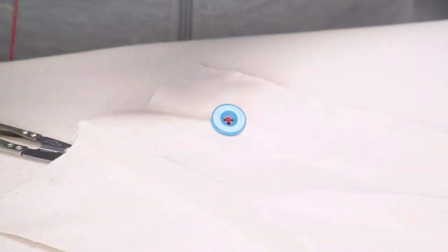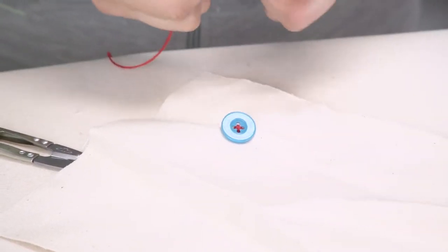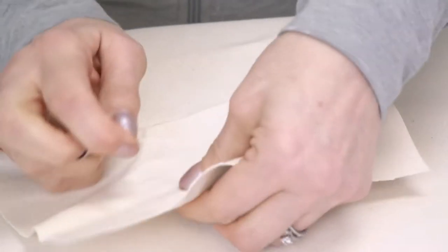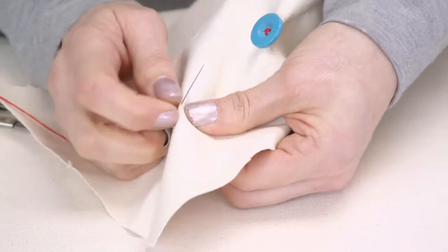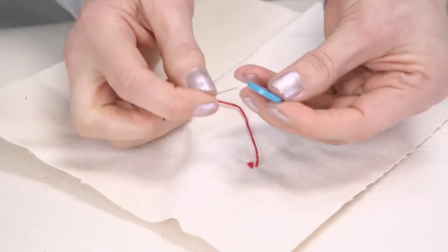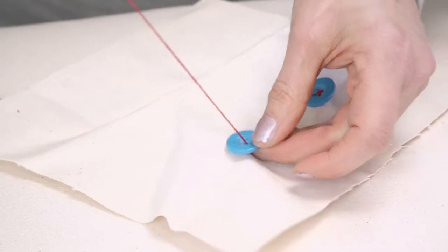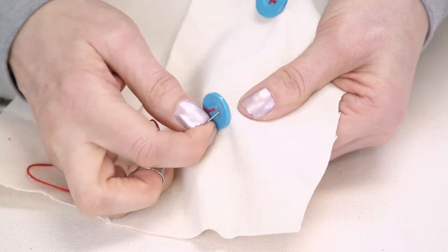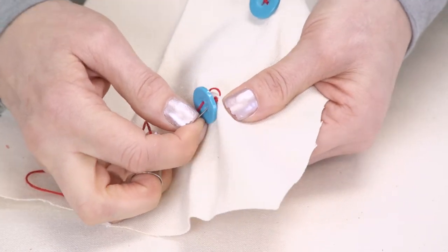We're going to show you that same technique, but with a shank button. The only difference is the button will be raised above the surface. Like I said, you'll use this when you have outerwear. We start the same through one of the holes.